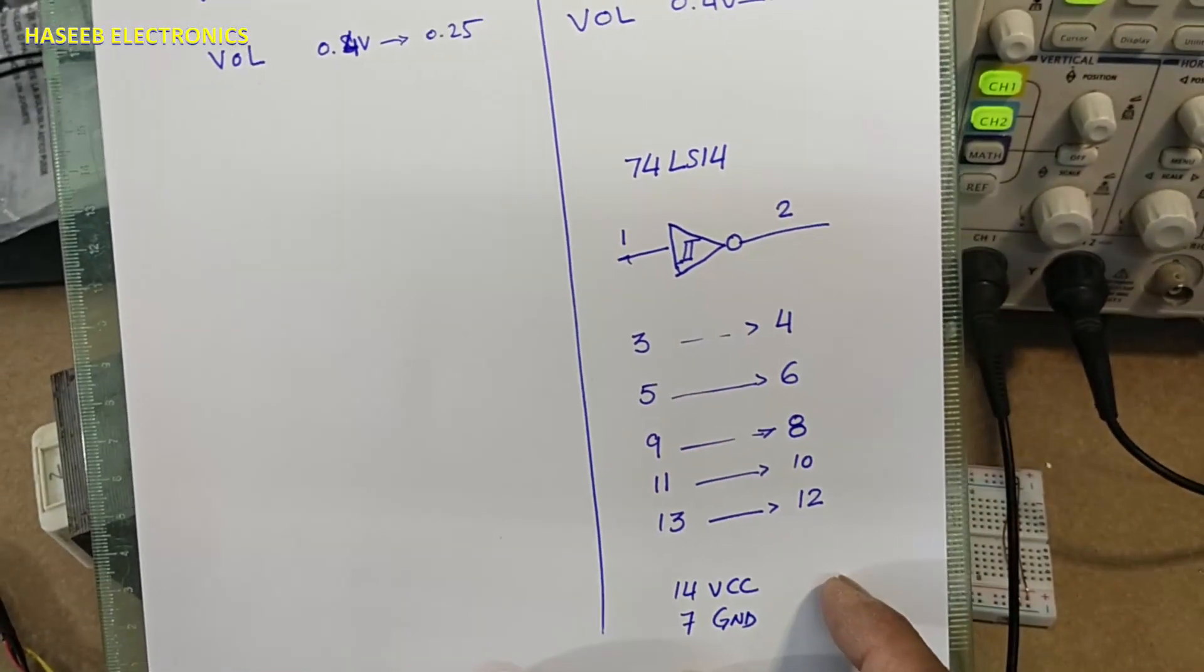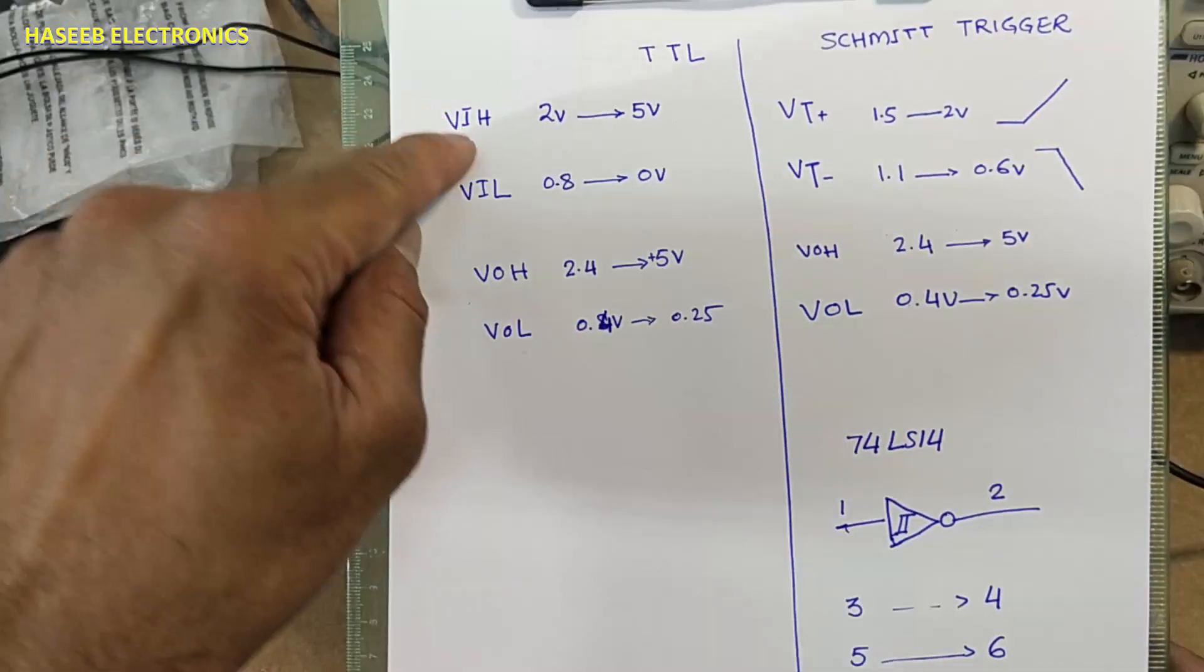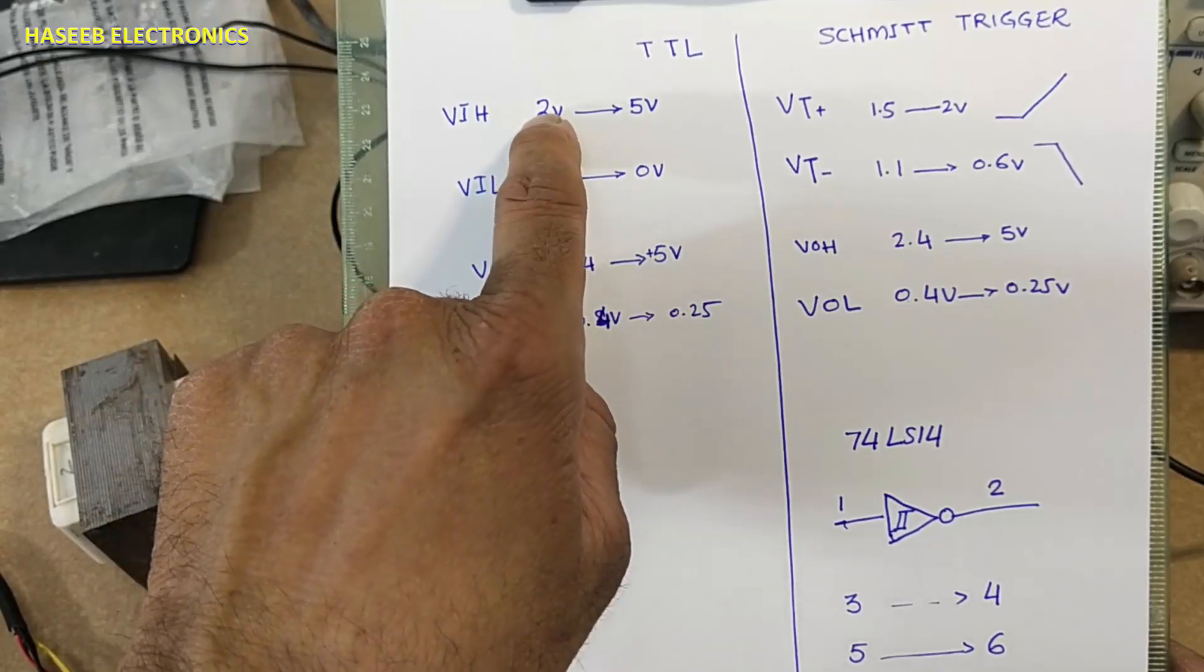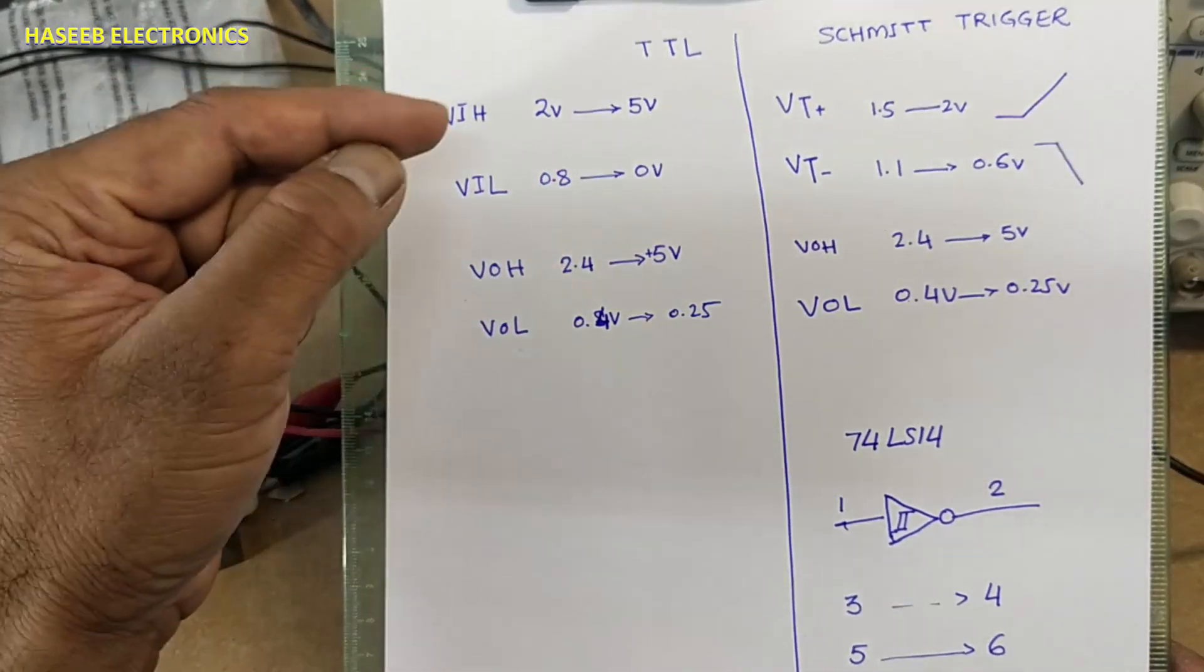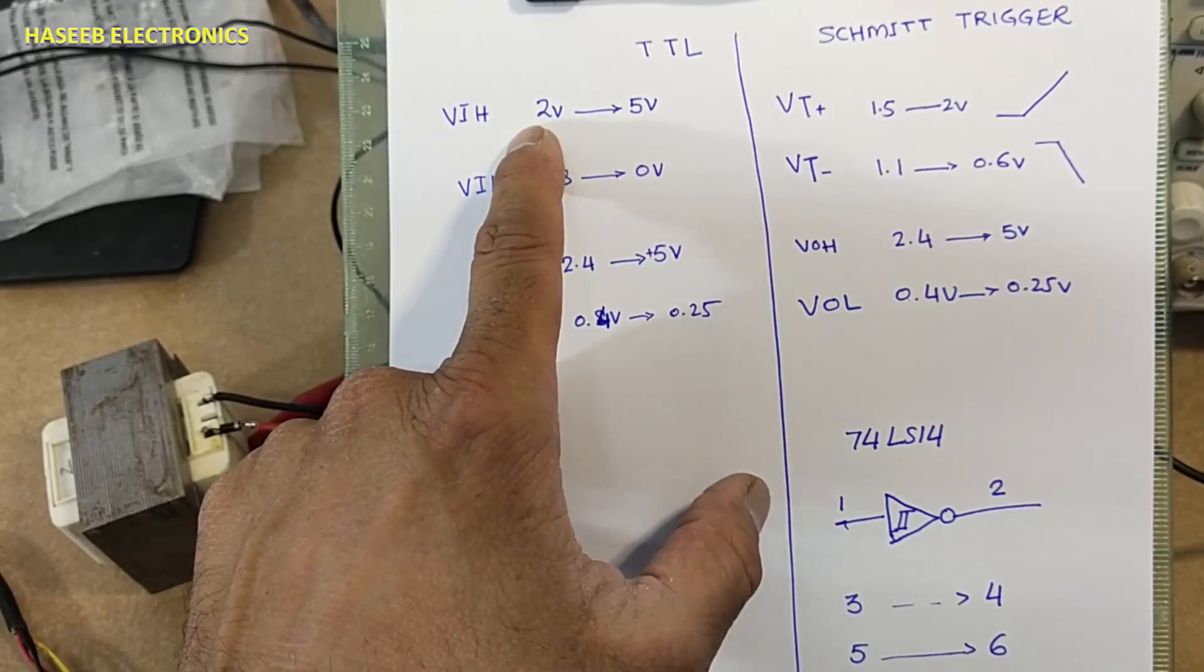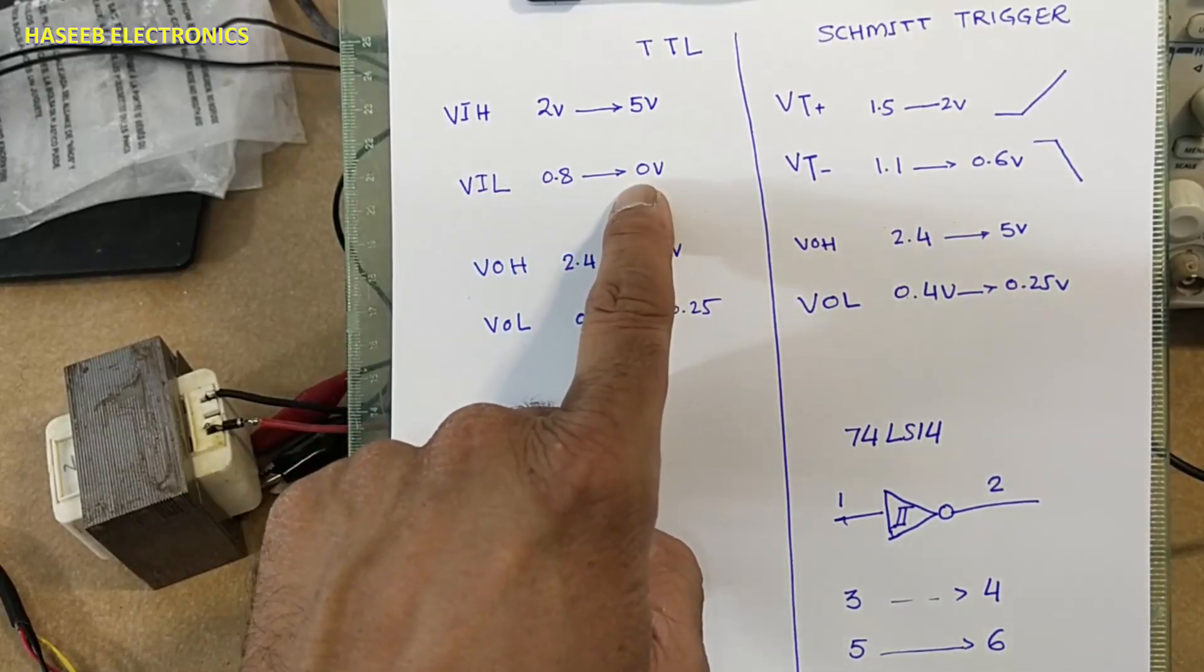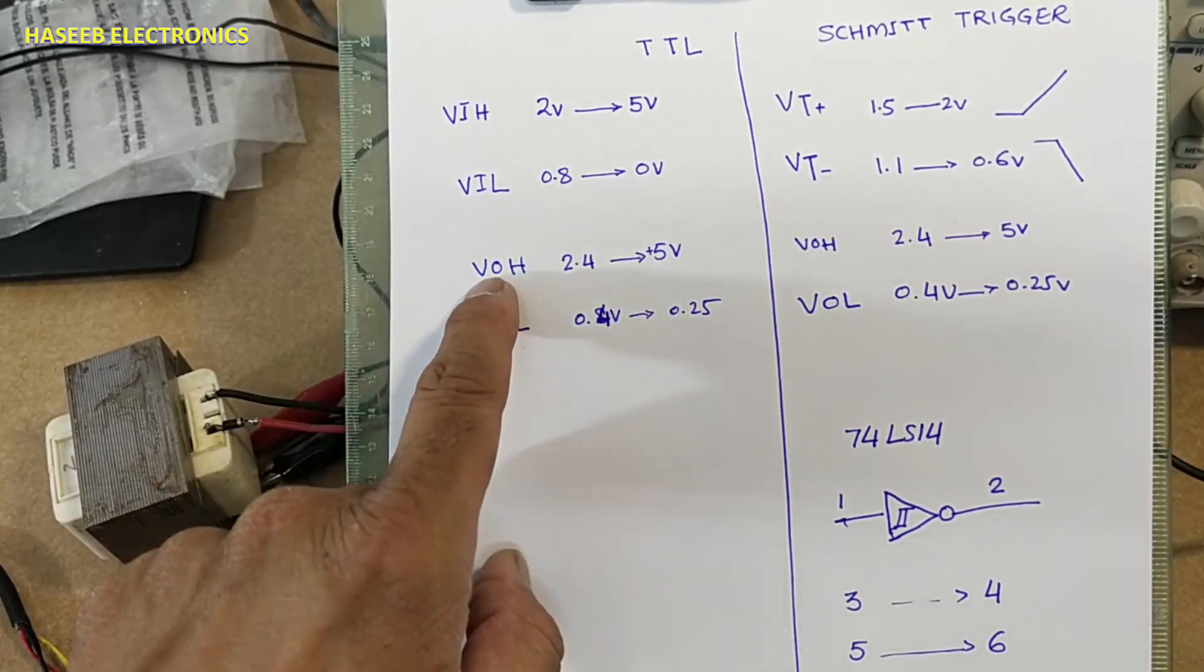What is Schmidt trigger? When we say TTL VIH, that is input signal VIH minimum 2 volts up to 5 volts. If the voltage at the input pin of TTL IC will be above 2 volts, that will be considered logic high. If the voltage will drop less than 0.8 to zero, it will be considered logic low.